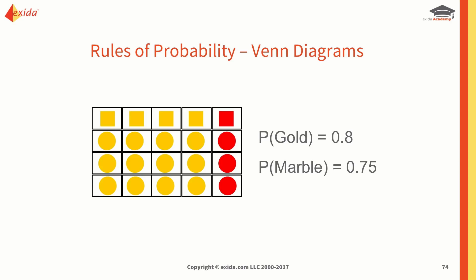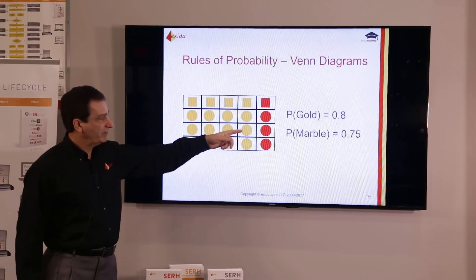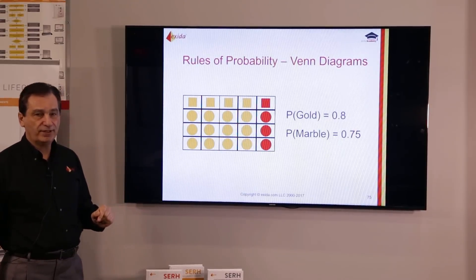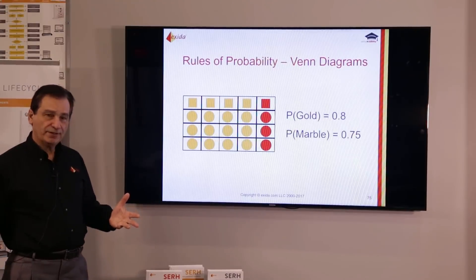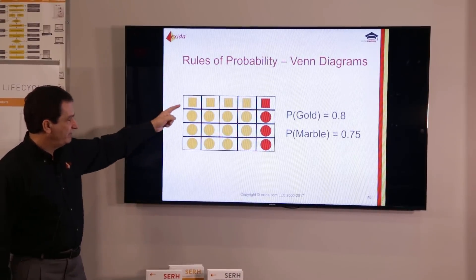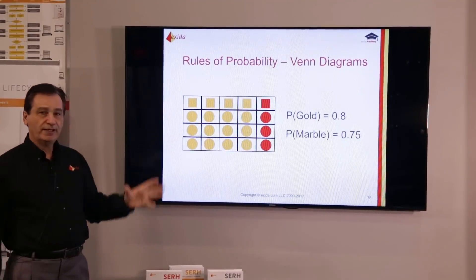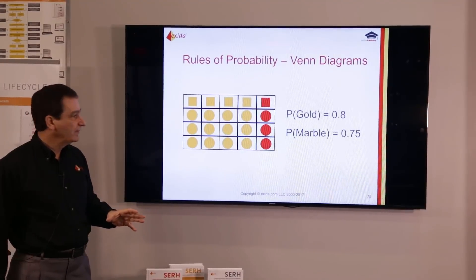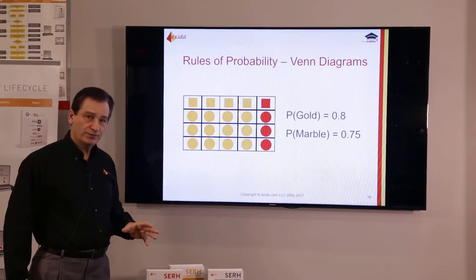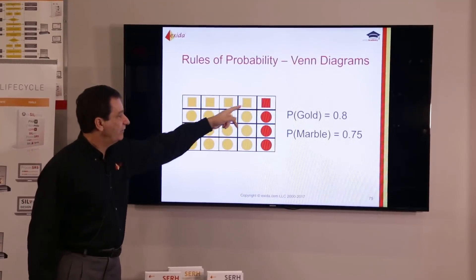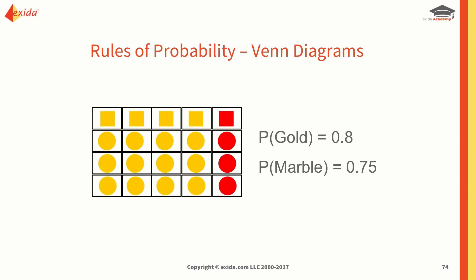Using a Venn diagram example, we're told the probability of gold is 0.8 and the probability of marble is 0.75. We can calculate these because we have a 5 by 4 matrix giving 20 possible combinations. For the probability of gold, we have 16 out of 20 possibilities, and 16 over 20 is 0.8.